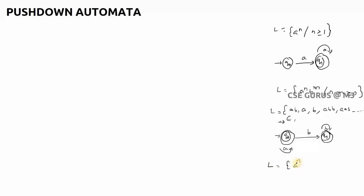Can you construct a finite automata for a^n b^n where n ≥ 1? Here n must be equal for both a's and b's — how many a's you take must equal the number of b's. So the language includes strings like 'ab', 'aabb', 'aaabbb', and so on. Now the question is: is it possible to construct a finite automata for this? If you try to construct one, you can observe there is no comparison of how many a's you are getting with respect to b's.